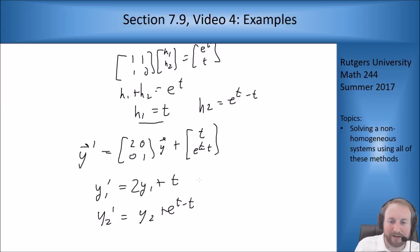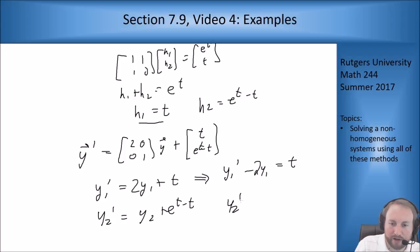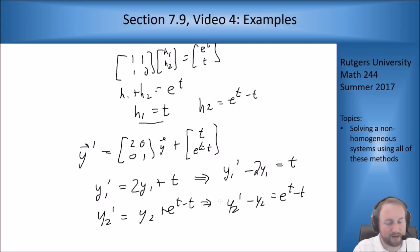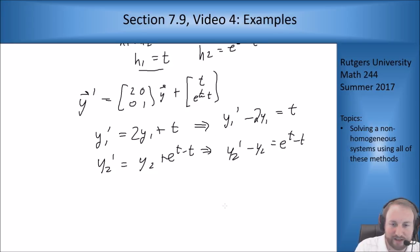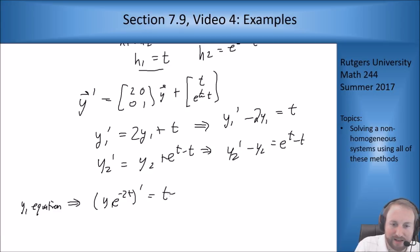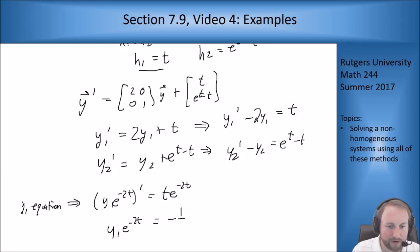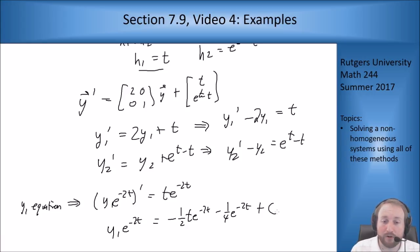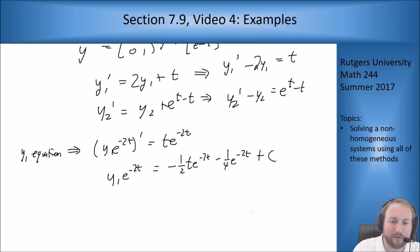Now I can solve for Y1 and Y2 individually. Rewriting: Y1' − 2Y1 = t. The integrating factor is e^{−2t}. So (Y1 e^{−2t})' = t·e^{−2t}. Integrating both sides by parts: Y1 e^{−2t} = −½ t·e^{−2t} + constant. Solving for Y1: Y1(t) = e^{2t}(−½ t − ¼) + C·e^{2t}.